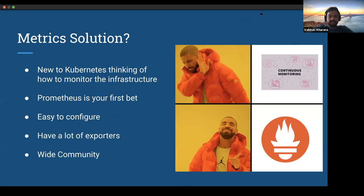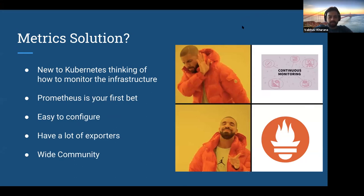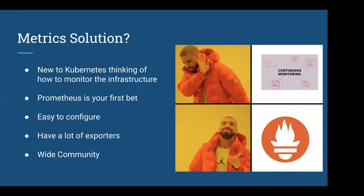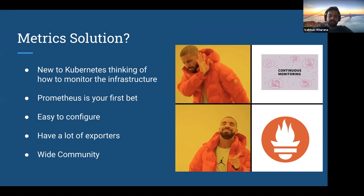So as a metrics solution — when you're new to Kubernetes and you Google around, the first thing you get is Prometheus as the first pick for any continuous monitoring solution. The reasons why Prometheus is so popular in the community: it's very easy to configure, you don't have to do a lot of juggling if you're just starting out. There are Helm charts available for installation, easy installation, Docker installations — everything is out there.